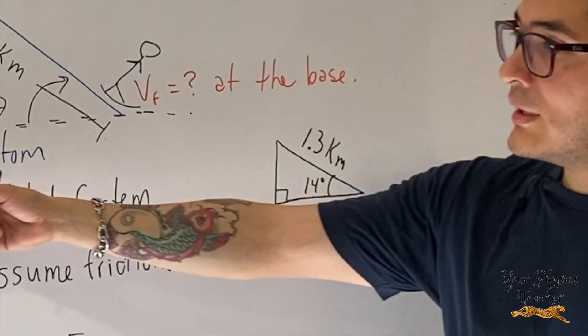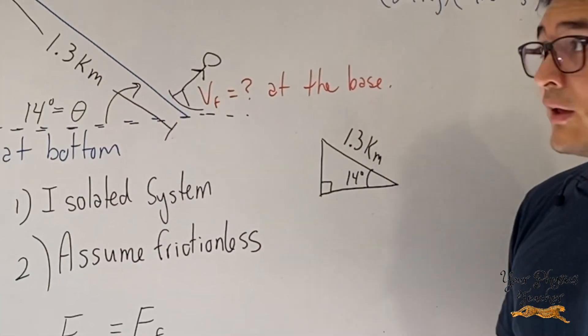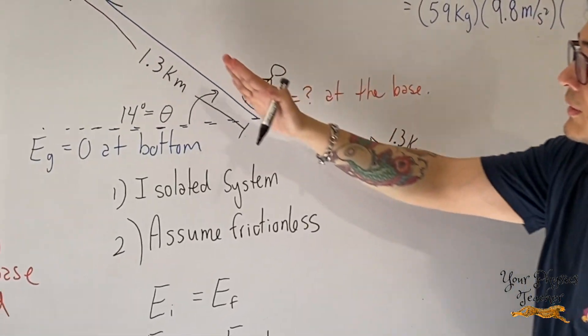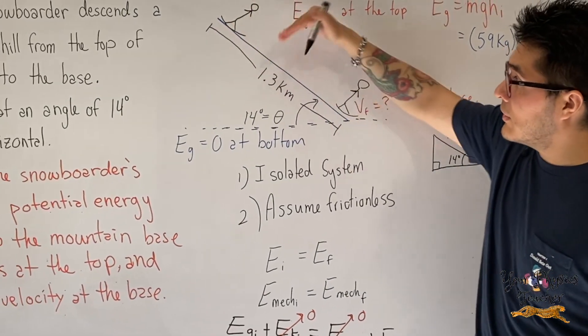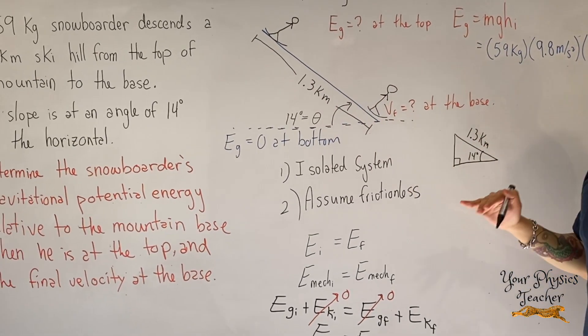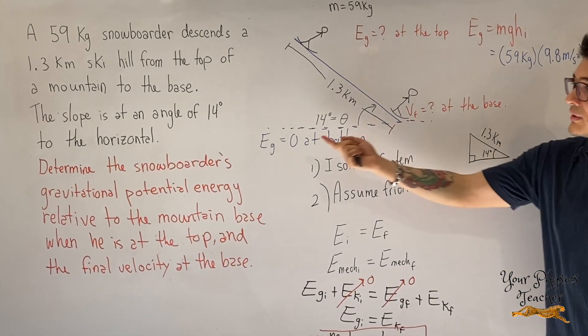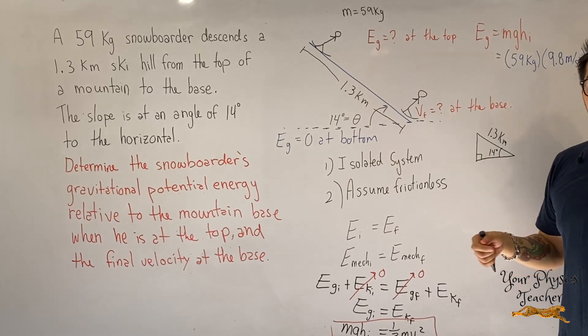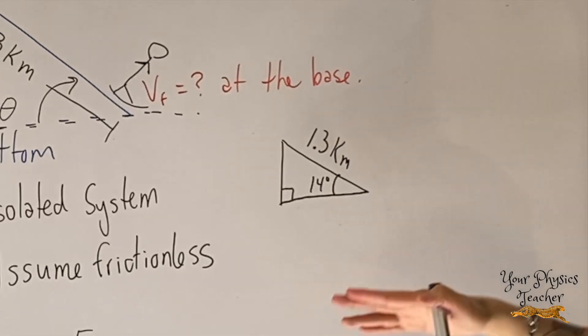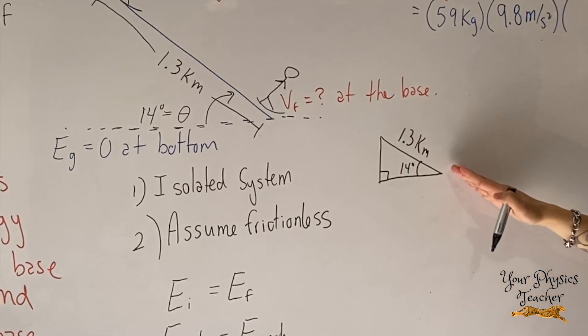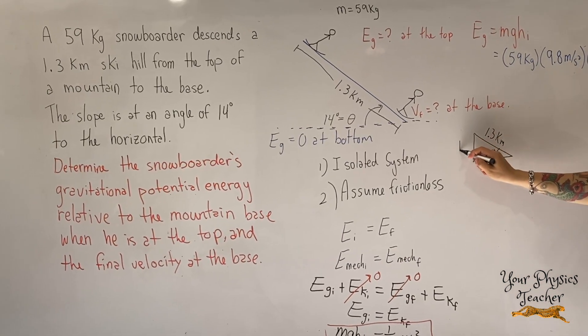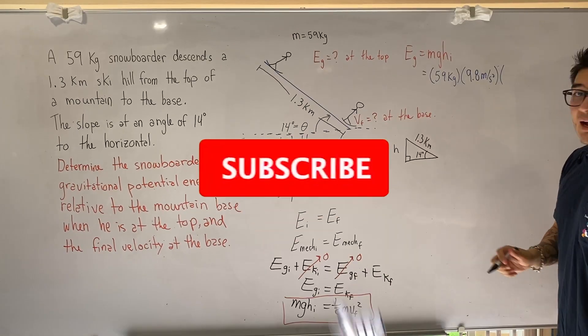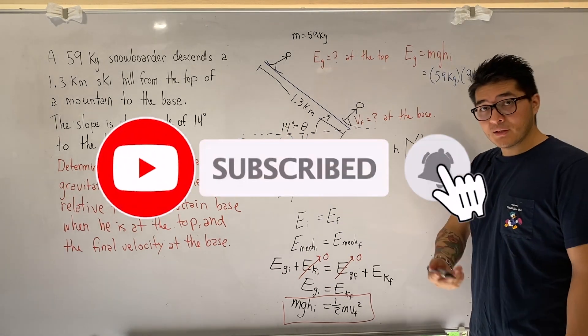Because the formula for potential energy does not care about the path. It doesn't care if you're going on an incline or if you're going on a curve. The only thing that potential energy cares about is the change in the object's height. So although they give you the slant, the only thing that we're really interested in is the height difference. So h.